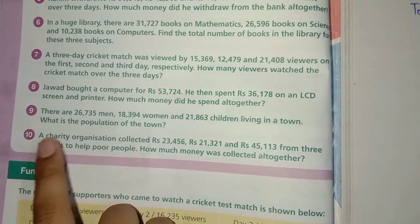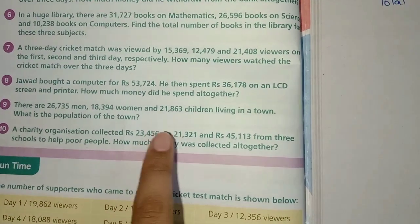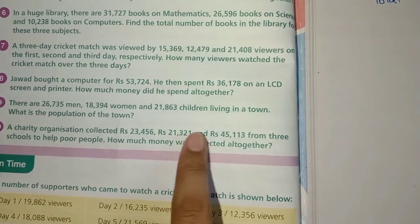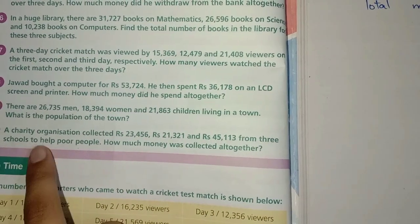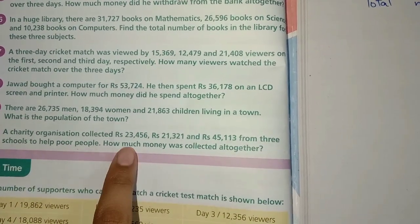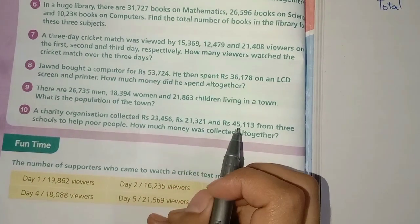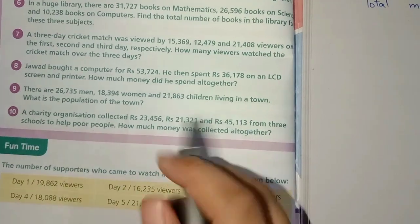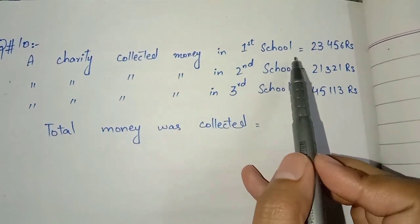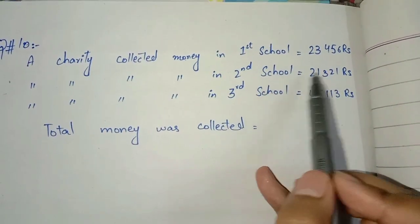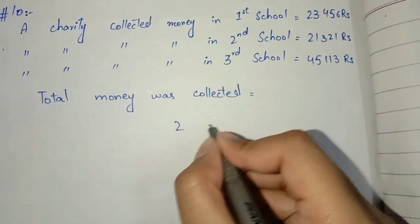Next question number 10: A charity organization collected rupees 23,456, rupees 21,321, and rupees 45,113 from three schools to help poor people. How much money was collected altogether? In garib bachon ke liye teen schools se itni money collect ki. Ab total batana hai kitni money collect hui.